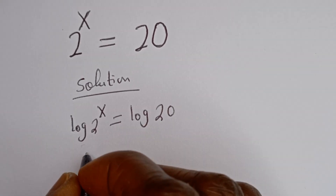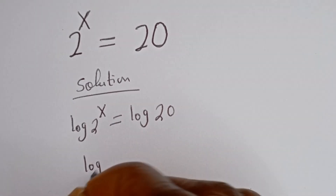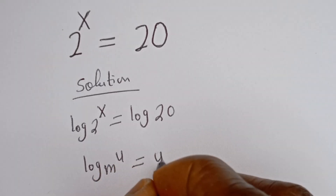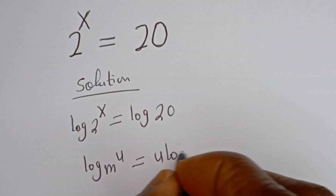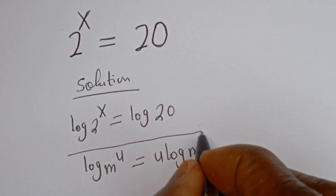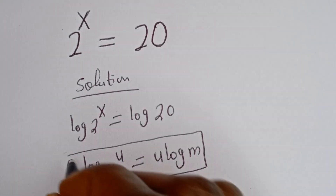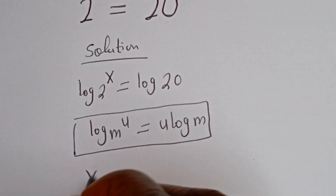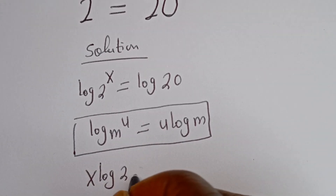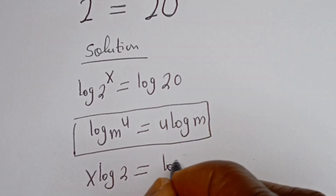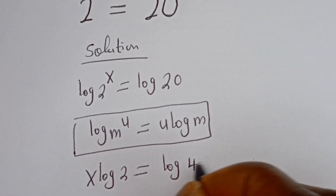Take note of this: if you have log m to the power of u, this is equal to u log m. Then this can be written as s log 2 is equal to log 20, which can be written as log 4 multiplied by 5.